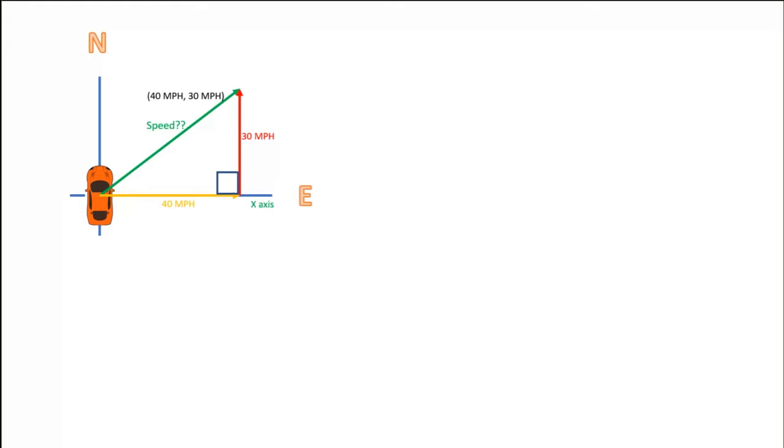We can figure this out with geometry. A vector is always a right triangle, with legs that are the x and y components and whose hypotenuse is the magnitude of the vector. You may have heard of the Pythagorean theorem, which states that c squared equals a squared plus b squared, where c is the hypotenuse and a and b are the other two legs.